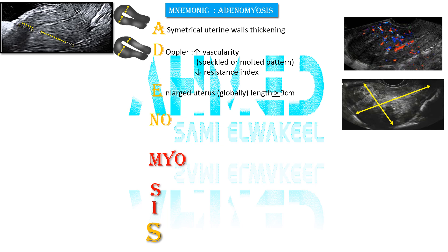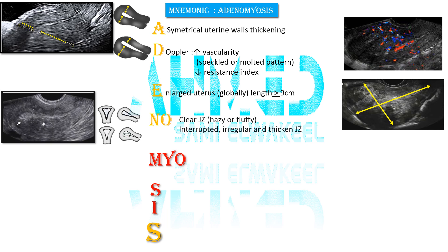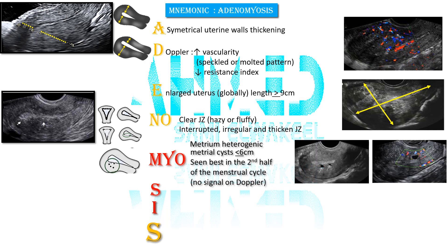E stands for enlarged uterus — globally enlarged uterus with length equal to or more than 9 cm. N stands for no clear junction zone — hazy, fluffy, interrupted, irregular, and pseudo-widened junction zone. Myo stands for myometrium that is heterogeneous, with myometrial cysts equal to or less than 6 mm, best seen in the second half of the menstrual cycle, with no signal on Doppler.